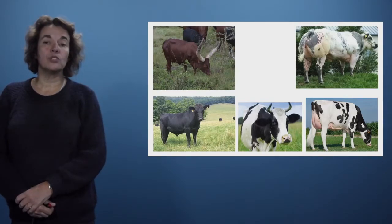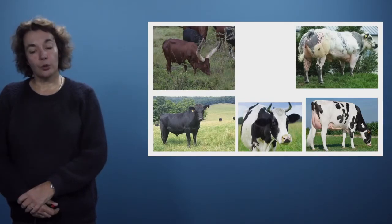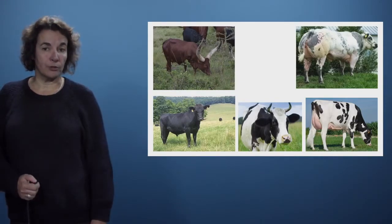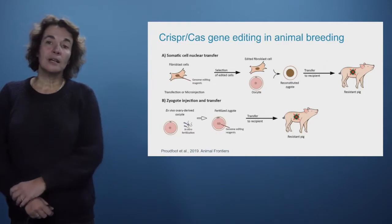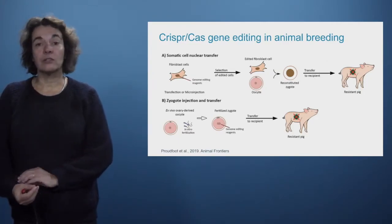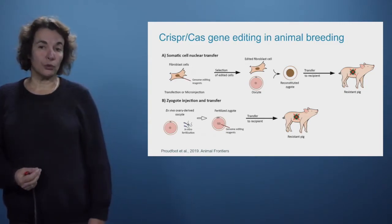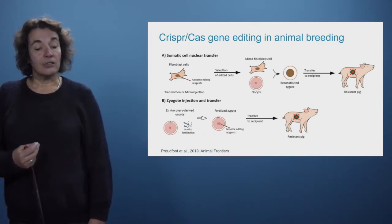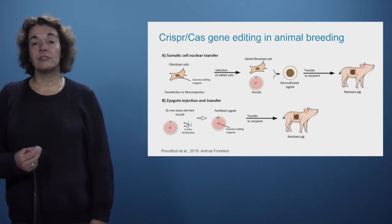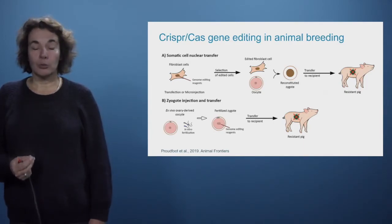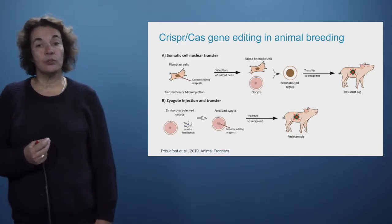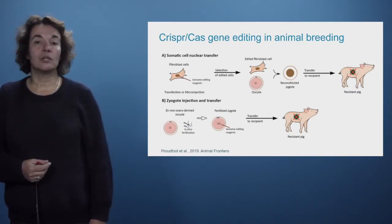If we want to do gene editing, we will start with monogenic traits, and one trait we are very much interested in is making pigs or animals in general resistant to certain diseases. An example is PRRS — porcine reproductive and respiratory syndrome virus — and there are two different techniques that you can use.